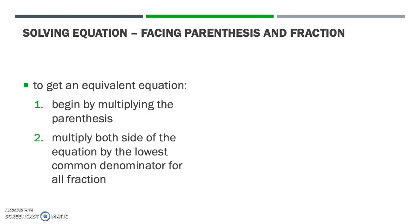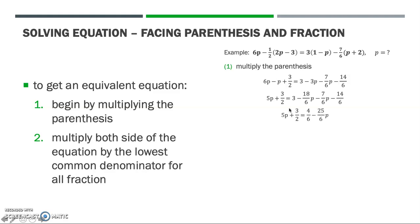What we do is we begin by multiplying the parenthesis, then we multiply both sides with the lowest common denominator. For example, here we have the following equation. So what we do first is multiply the parenthesis on both sides. From the left side we have this result and from the right side we have this result. And then we make it simpler. And this is the end result of multiplying the parenthesis. Then we multiply by the lowest common denominator. Here we have 2 and 6, so the lowest common denominator is 6. Thus we multiply by 6.